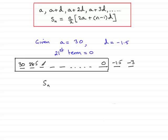What we really need to do is add these 21 terms up. So the largest possible positive value would be S21. We need to set n equal to 21.